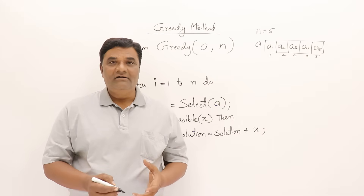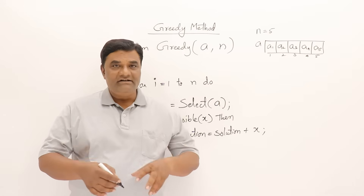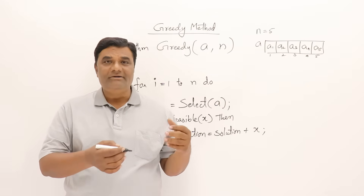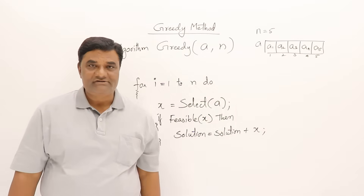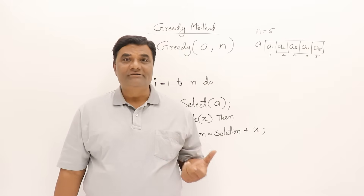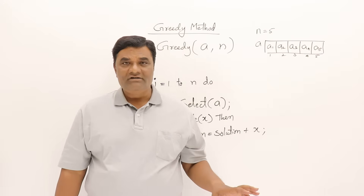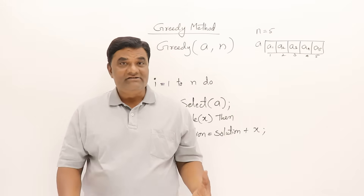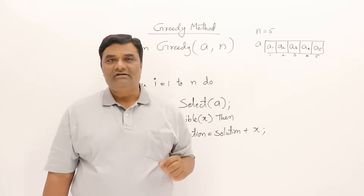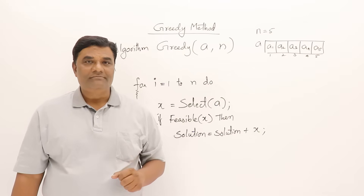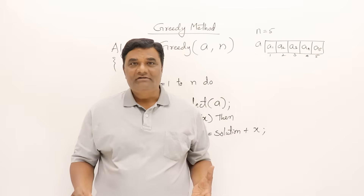Suppose you have to buy the best car — best in terms of features, you want the optimal car. One method is to look at all the brands and all the models available in the market or at least in your city, check all of them, and then select the best car. This approach is very time consuming as you have to check each and every brand and model.